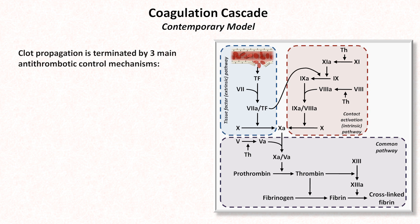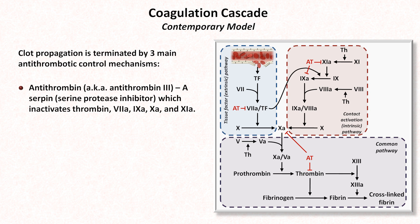To prevent either spontaneous or runaway intravascular coagulation, there are three main antithrombotic control mechanisms. The first is antithrombin, formerly known as antithrombin-3, which is a serine protease inhibitor that inactivates thrombin as well as factors 7, 9, 10, and 11. Binding to heparin, either endogenous or exogenous, greatly increases antithrombin's protease activity, though the physiologic role of heparin as an endogenous antithrombotic mechanism is unclear.